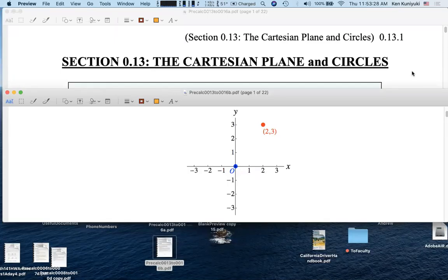Hi everyone, we're going to Section 0.13 on the Cartesian plane and circles—basically this classic XY plane. Cartesian is named after René Descartes, the founder of analytic geometry. According to the story, Descartes was thrown off